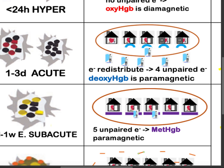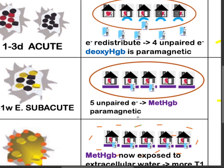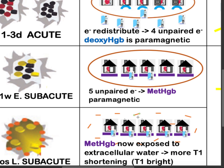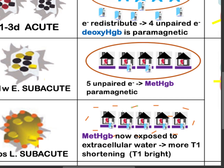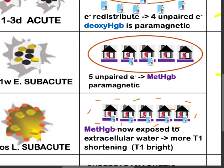Notice that methemoglobin now has a planar heme, which allows dipole-dipole interaction. When methemoglobin is outside the cell, it has direct dipole-dipole interaction, and direct dipole-dipole interaction makes it even more T1 bright.